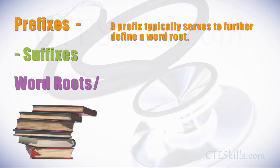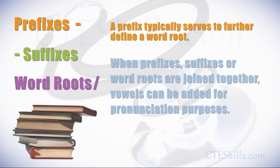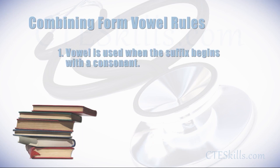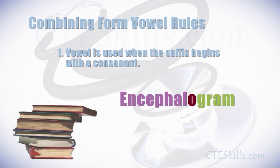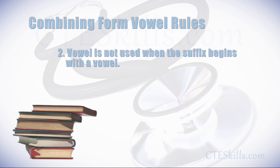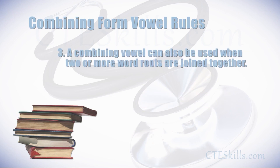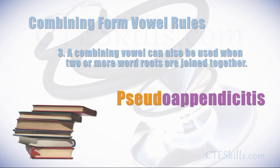The prefix typically serves to further define a word root. When prefixes, suffixes, or word roots are joined together, vowels can be added for pronunciation purposes — this is called combining form vowels. The general rules are: a combining vowel is used when the suffix begins with a consonant, as with 'encephalogram'; a combining vowel is not used when the suffix begins with a vowel, as in 'encephalitis'; and a combining vowel can also be used when two or more word roots are joined together, such as with pseudo-appendicitis.